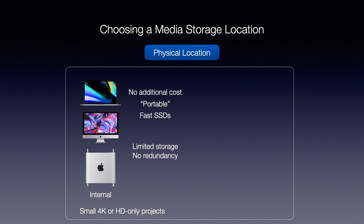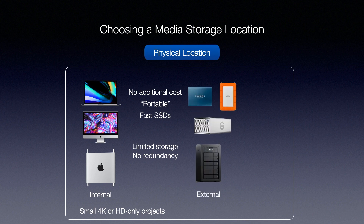Most of the time, however, we recommend using external drives for storing your media for editing with Final Cut Pro 10. Small USB 3 and Thunderbolt drives are relatively inexpensive and very portable, but can be slow, especially if you're using USB 3. Generally, we recommend Thunderbolt drives, especially if you're working with 4K material, although USB 3 can work, especially if you're using optimized or proxy media, which we'll talk about shortly.